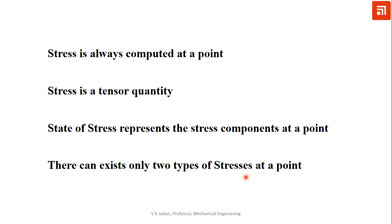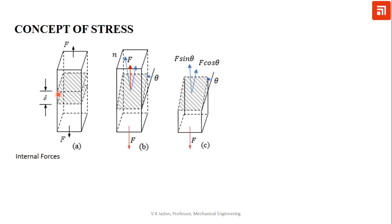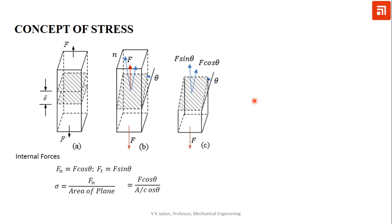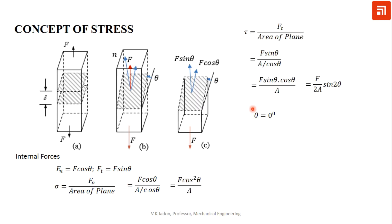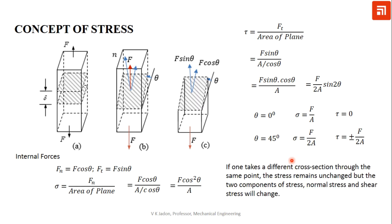These are very important aspects of stress. Stress is essentially an internal force. If we consider a prismatic bar subjected to tensile load with deformation delta, and take any inclined plane, the force can be resolved in two directions: normal to the plane and along the plane. The normal component induces normal stress, and the component along the plane induces shear stress. When theta is zero, there is only normal stress, because the plane is normal to the axial direction of the member.